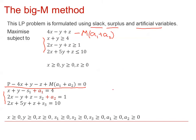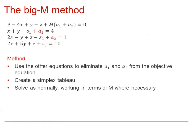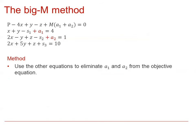Not forgetting the trivial constraints. Here is the method: we need to use the other equations to eliminate the artificial variables from the objective equation. We then create the Simplex tableau and solve as normal, but this time working in terms of M. We're going to look at eliminating a1 and a2 from the objective equation.